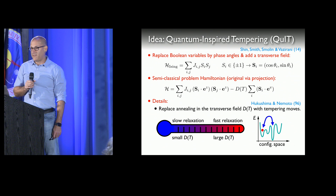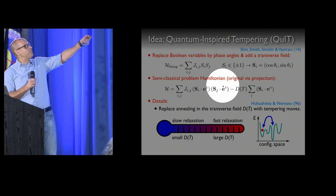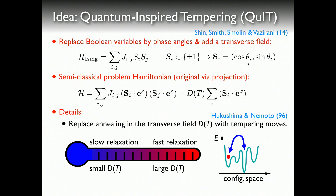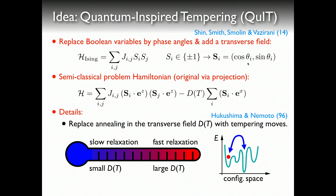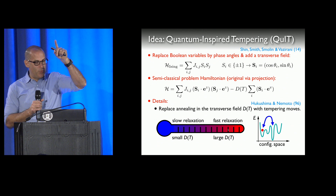This is what we decided to call Quantum Inspired Tempering, or QuIT. The idea is based on the SSSV approach from 2014: we start by taking our Hamiltonian and replacing the spins by phase angles. What we get is a semi-classical approximation, and we can get the original Hamiltonian back simply by projection. Instead of using annealing, we replace it by tempering. Annealing is a one-way optimization where you sequentially reduce a control parameter, which can leave you stuck in a metastable state.